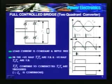Now, we will replace the remaining 2 diodes by thyristors. The resulting bridge is known as a fully controlled bridge. Here is the configuration: T1 to T4, they are thyristors.